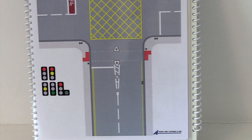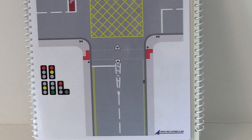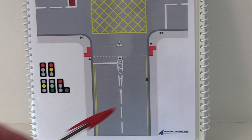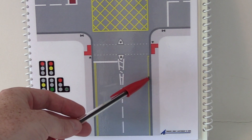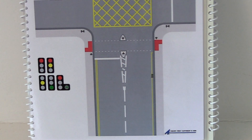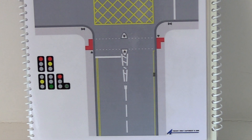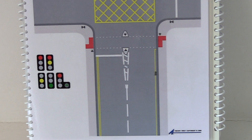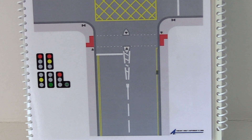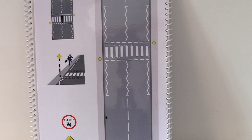We also have double yellow lines, which means no parking at any time. A single yellow line means no parking during business hours, or during the time shown on the sign if there is a sign.